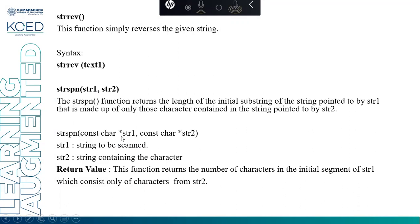For example, constant character string 1 and constant character string 2. str1 is the string to be scanned. str2 is a string containing the characters. This function returns the number of characters in the initial segment of str1 which consists only of characters from str2 — how many initial characters of str1 match str2.